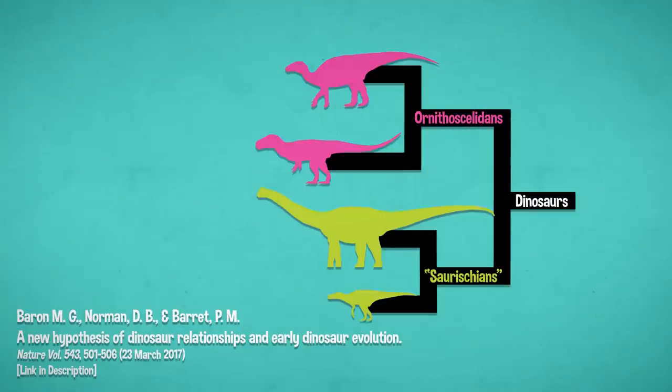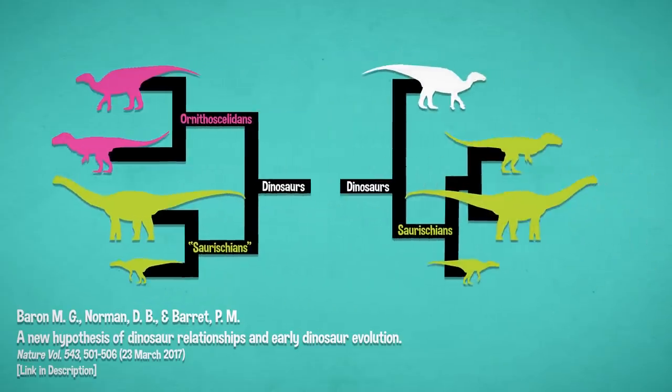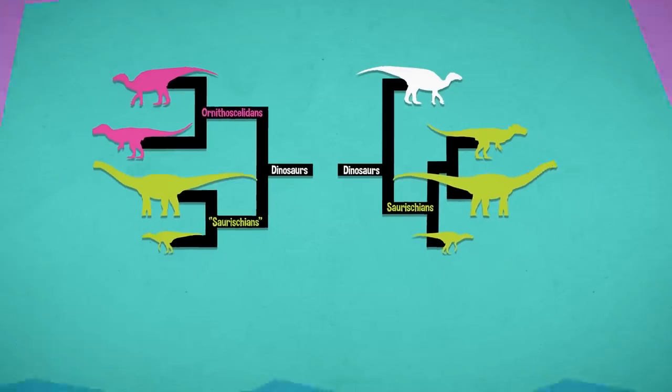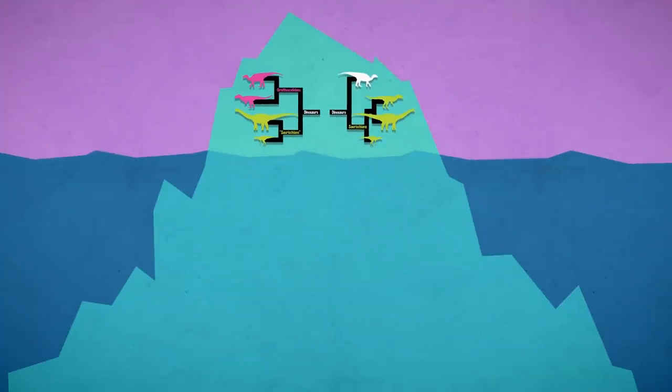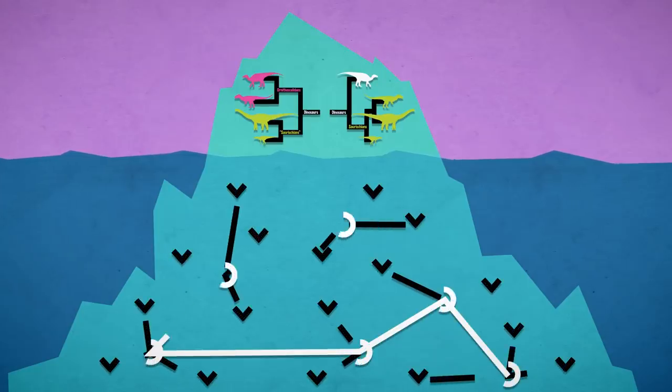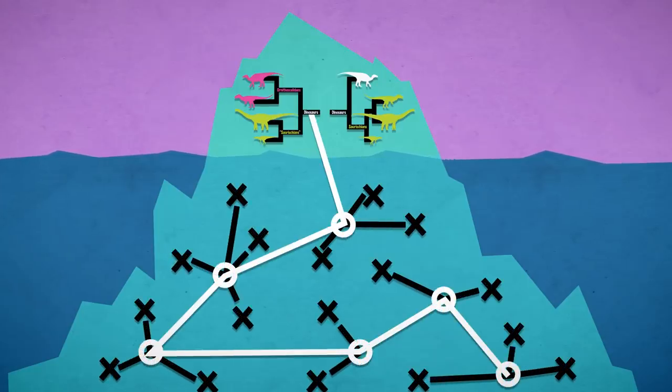Baron, Norman, and Barrett found Ornithoskelida, a sister relationship between Ornithischians and theropods, more parsimonious than the traditional Saurischia arrangement. But that's not the whole story. There's more to phylogenetics than just finding the most parsimonious trees, and every decision workers make along the way affects the relationships they recover in the end.